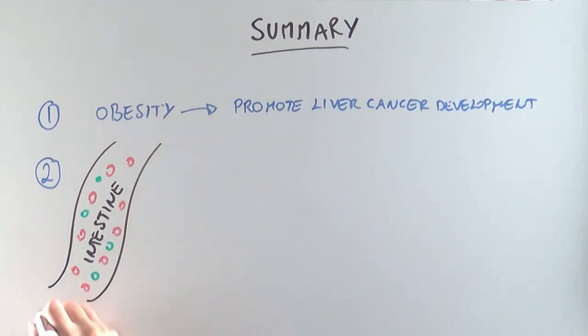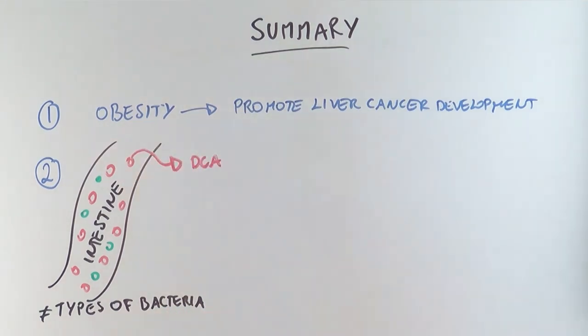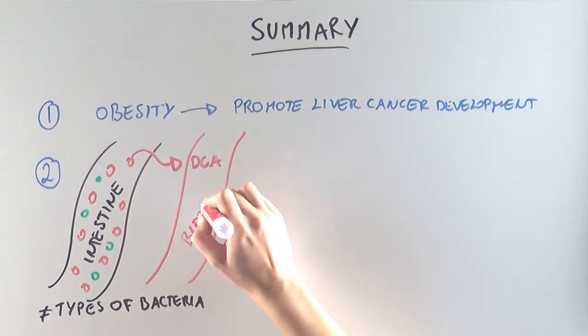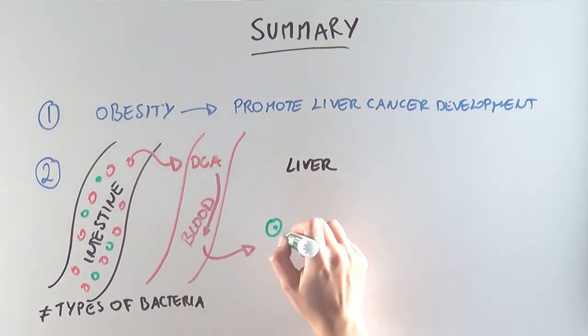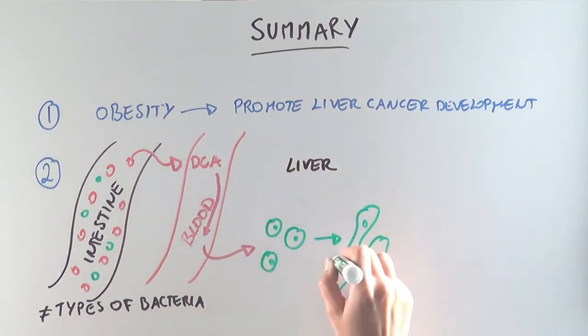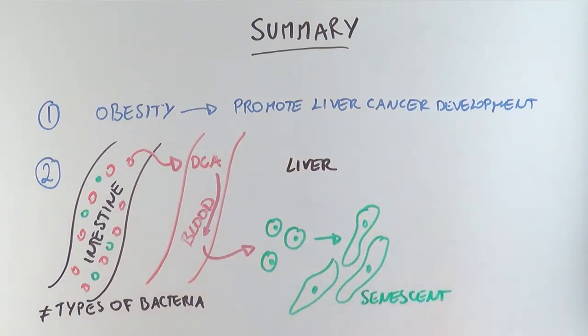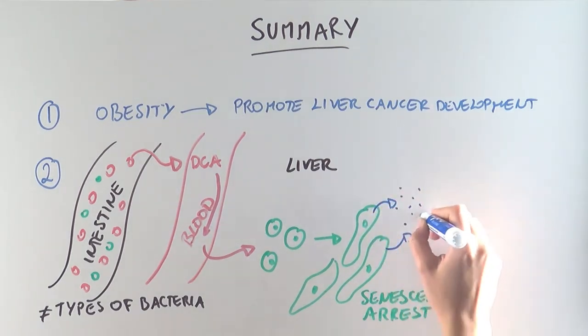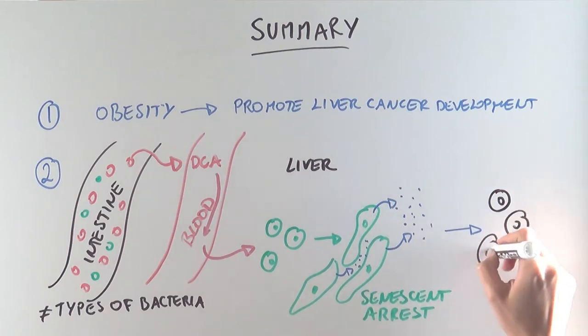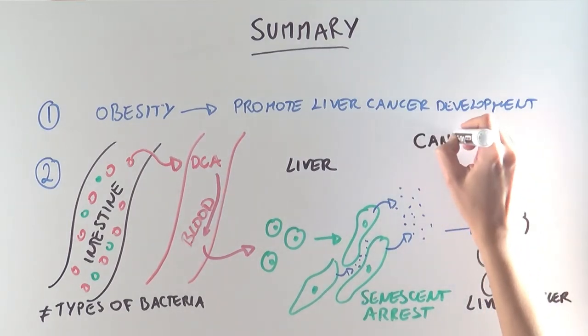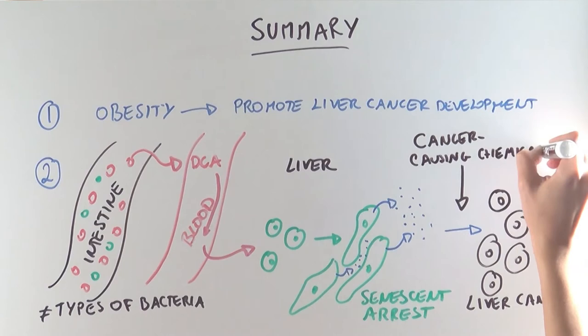Now, obese mice have more red bacteria and fewer green bacteria. These red bacteria produce lots of DCA, which enters the bloodstream and travels to the liver. In the liver, DCA causes liver cells to enter a state of arrest, or senescence. These senescence cells in turn produce compounds which promote liver cancer development, in the presence of a trigger, in this case the cancer-causing chemical given to the mice.